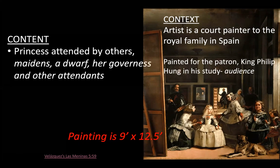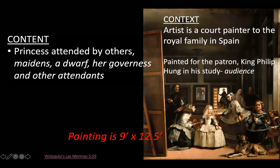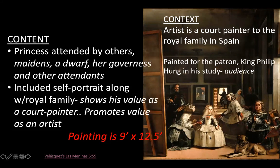What is being painted: it's the princess. Here's the princess in the center — that's the king and queen's daughter — attended by others: maidens, a dwarf, her governess, other attendants. Make sure you include that there's the self-portrait along with the royal family, and that is showing his status. It's social status. He's not just a craftsman; he is the royal painter. So it's promoting the value of an artist.